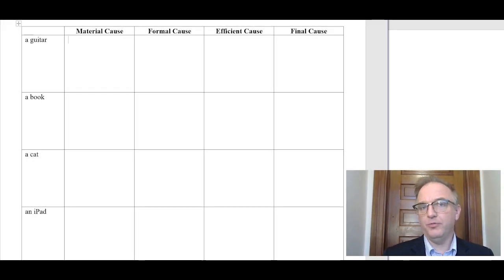Hi guys. I thought it might help to review the four causes by going through this worksheet that I've put together and filling in some of the boxes about the material, formal, efficient, and final cause of these different objects. So let's go ahead and do this on the screen right now. I'll do some of the rows and leave some others for you to do yourself.